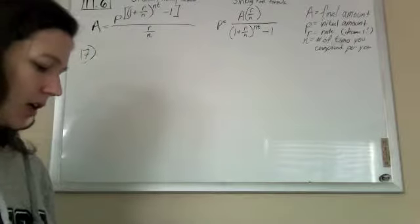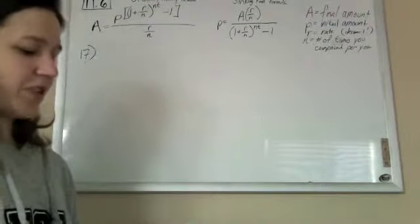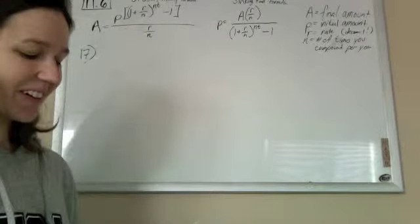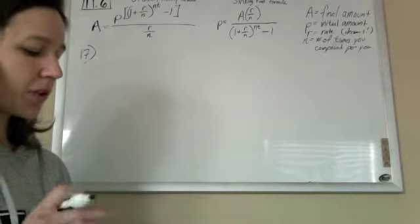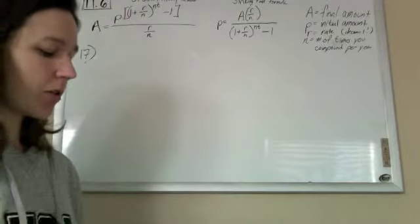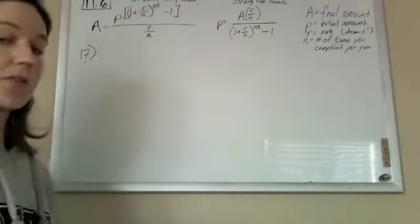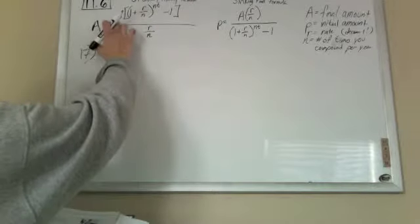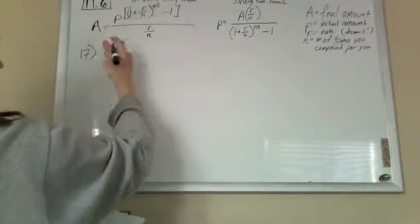So for number 17, to save for retirement, Channa Bryant invests $50 each month in an ordinary annuity with 3% interest compounded monthly. Determine the accumulated amount in her annuity after 35 years. So you want to know the final amount if she invests $50. So you're using just your ordinary annuity formula.